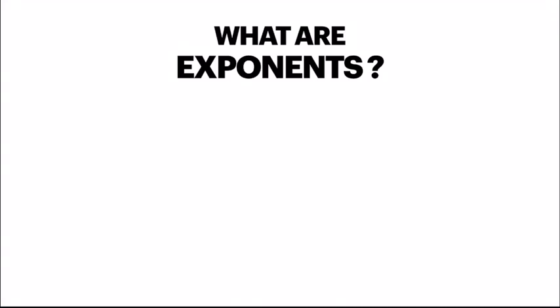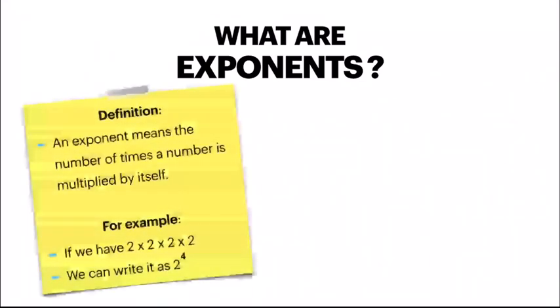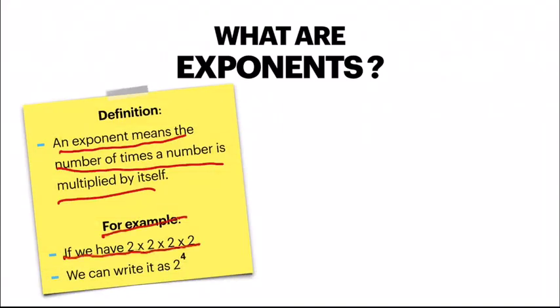Before that, let's quickly understand what are exponents, because this topic is very important when you are solving LCM questions using prime factorization method. An exponent means the number of times a number is multiplied by itself. For example, we have 2 into 2 into 2 into 2 — 2 is multiplied by 2, 4 times. In exponent form we write it as 2 to the power 4.